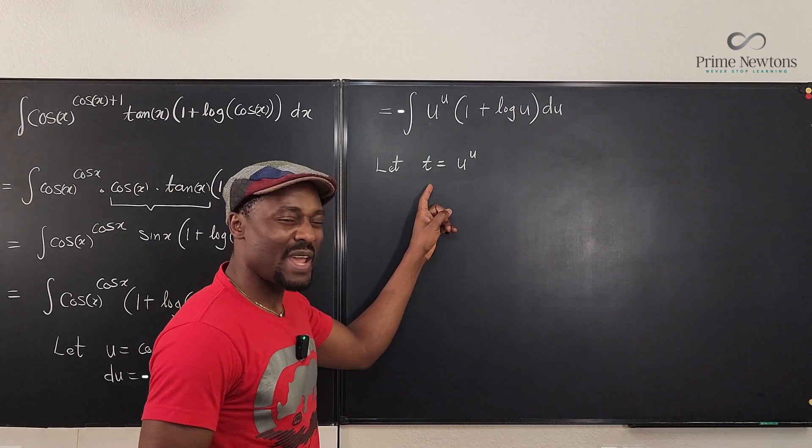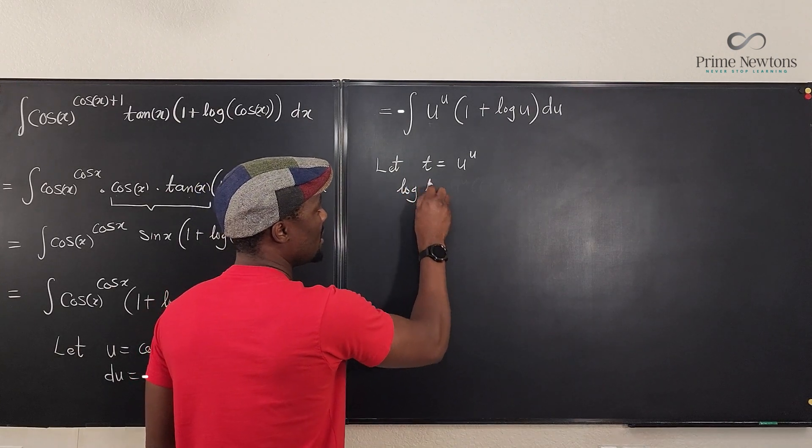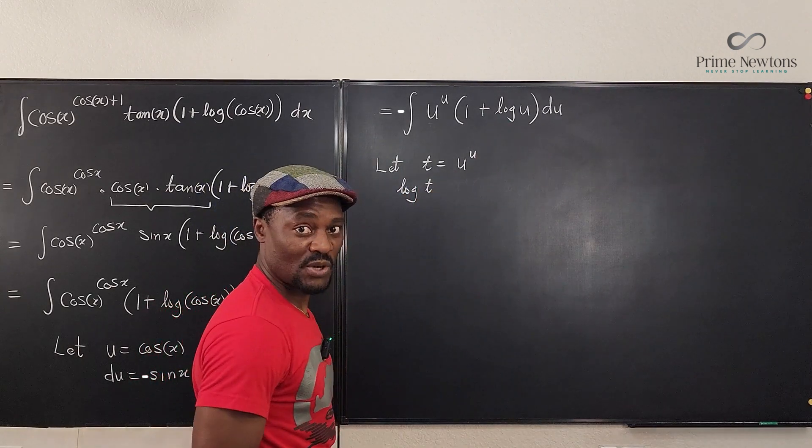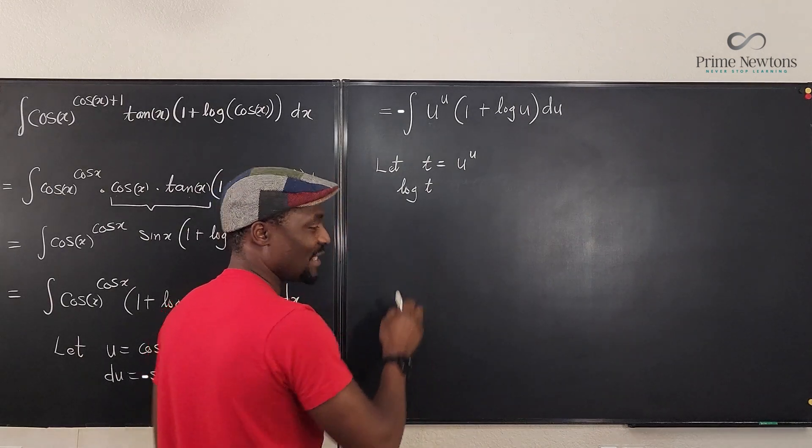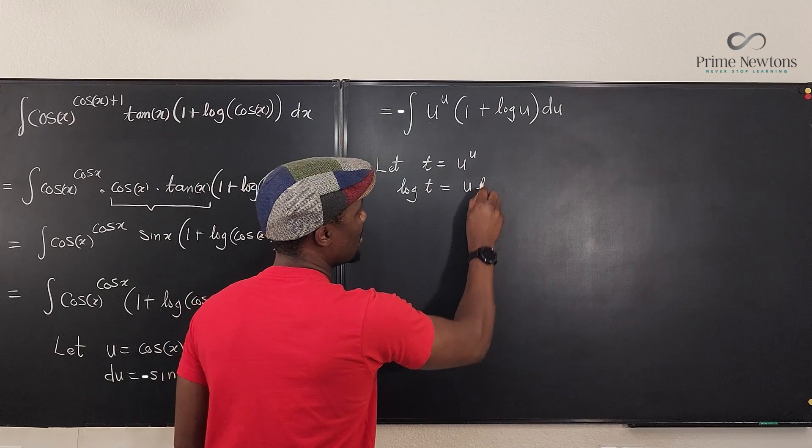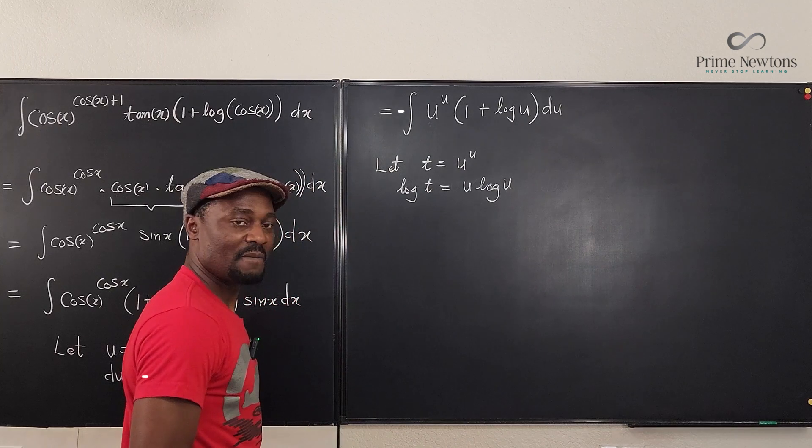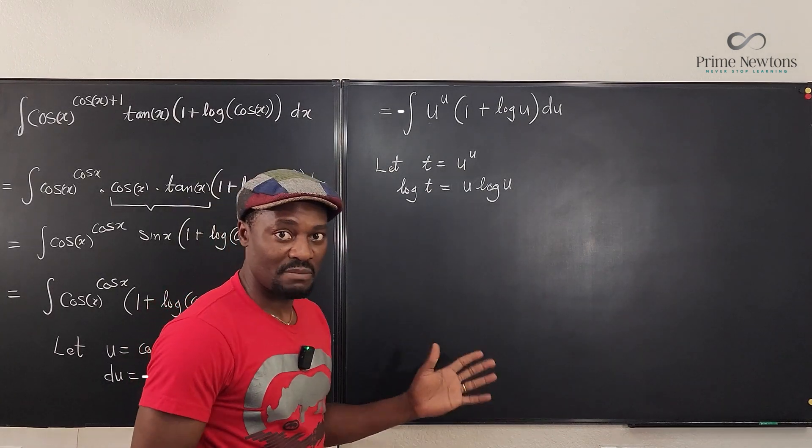So we're going to take the log of t. Since I'm using log and not natural log, I'm going to stick to log. I could do ln. So it's going to be u log u. So now we're assuming I'm taking base e.